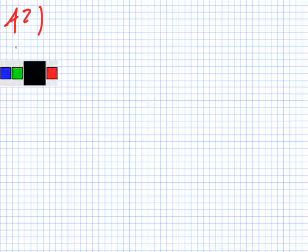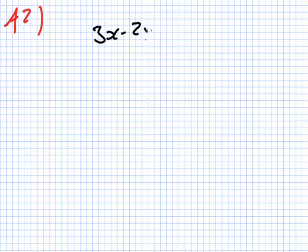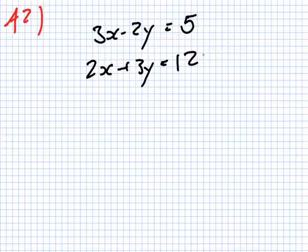Right, A2. So you have this line, 3x minus 2y equals 5, intersects this line, 2x plus 3y equals 12. Find where they meet.